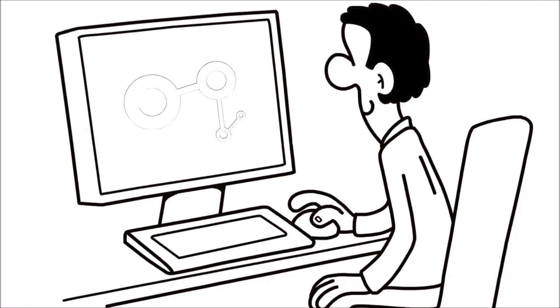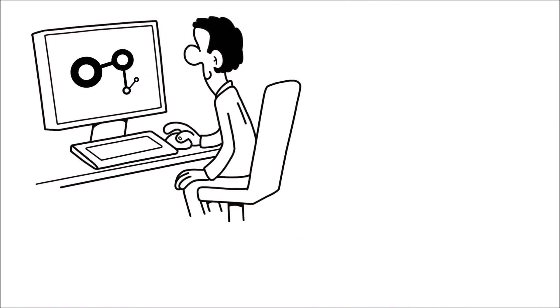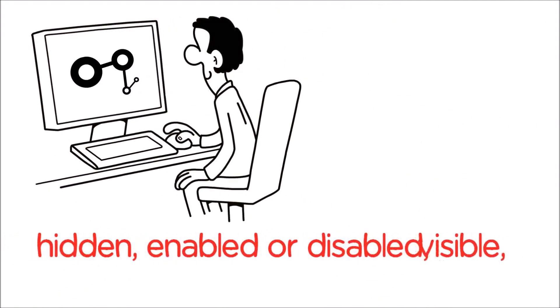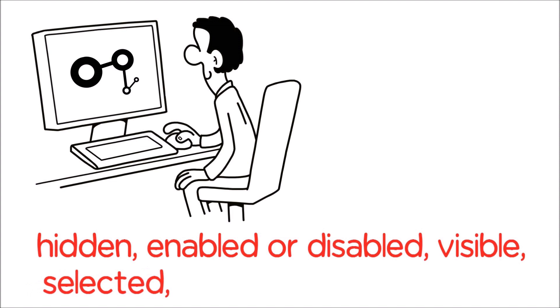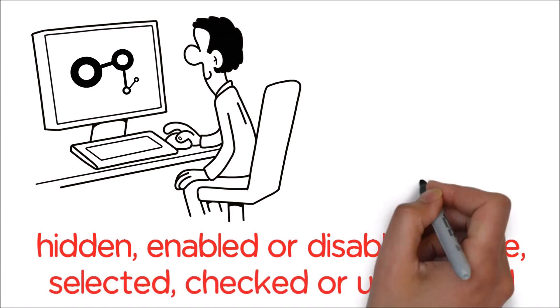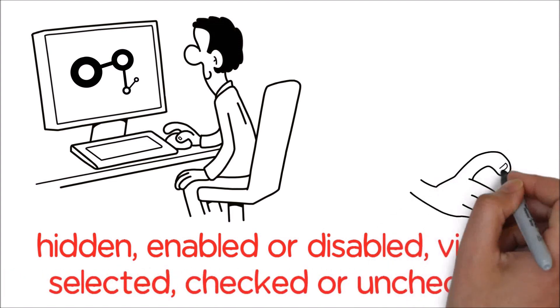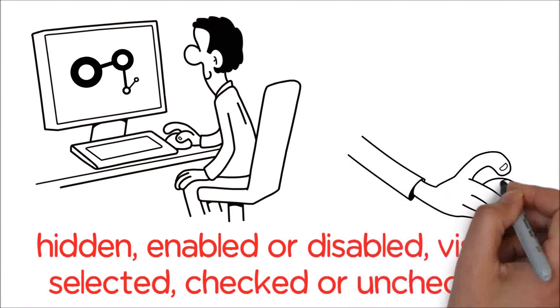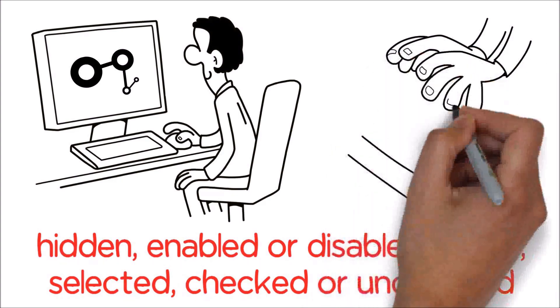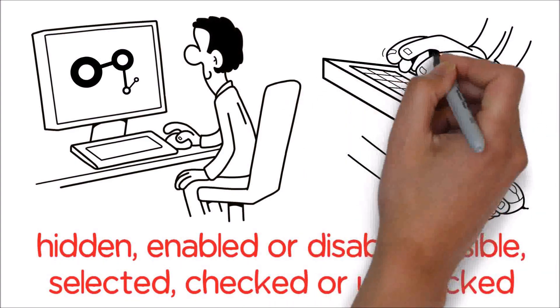Once you understand how to find an element or group of elements, you'll learn to evaluate whether elements are hidden, enabled or disabled, visible, selected, checked or unchecked.